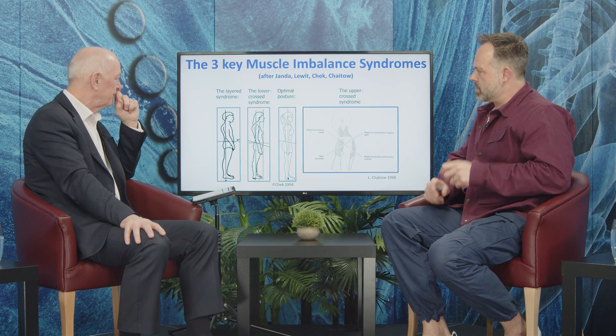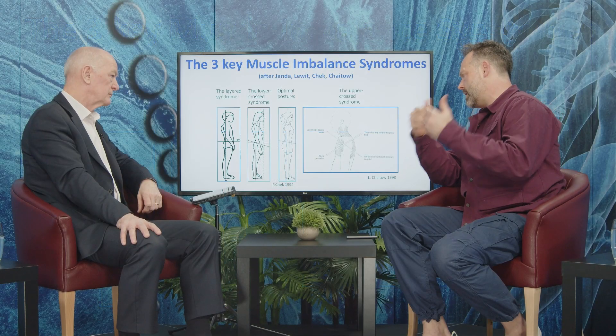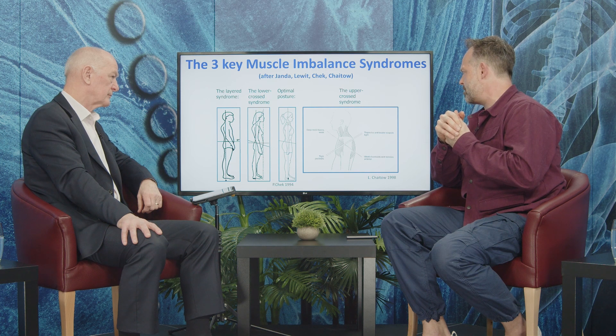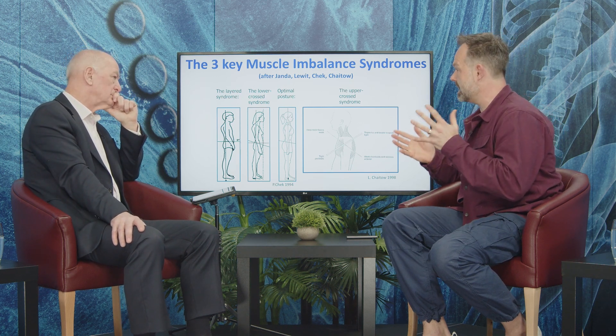I think it's quite helpful to just start out by talking about Janda's muscle imbalance syndromes, just briefly, because that's what this is based upon. In fact, I'll show you a slide. So these are the classic muscle imbalance syndromes. You've got the layered syndrome over closest to you, and then the lower cross syndrome, optimal posture in the middle, and then you've got what's called the upper cross syndrome on the right hand side. The two that are probably talked about the most are the upper cross and the lower cross syndrome, because Janda talked a lot about them. The layered syndrome was a secondary thing that Janda and Lewitt talked about, because Janda found that these muscle imbalance syndromes were the most common in his patient base.